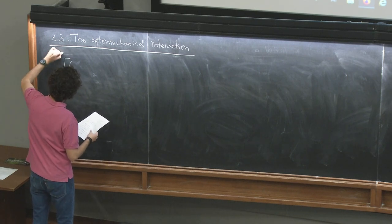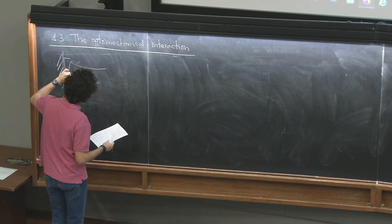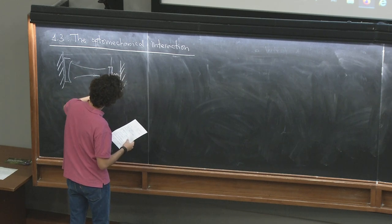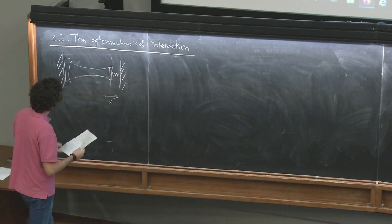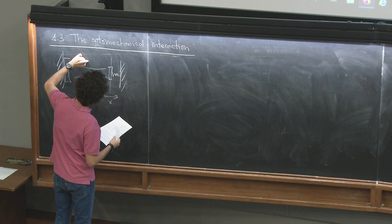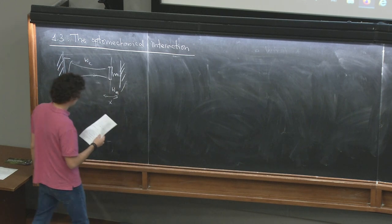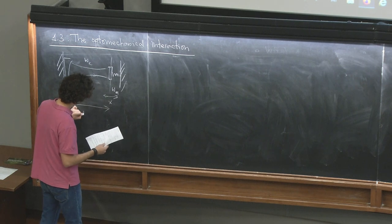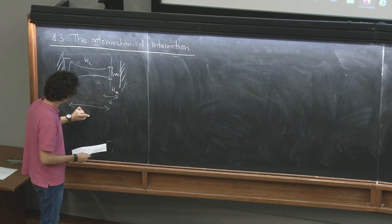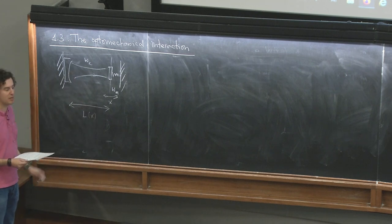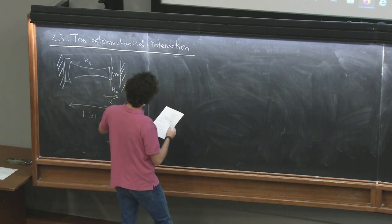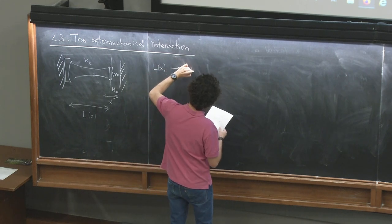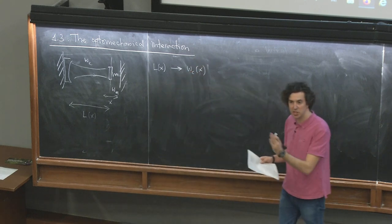In our setup, we have this fixed mirror, then a movable one with motion X, and a cavity mode at frequency ωc, plus a mechanical mode at ωm. There is the length of the cavity, L. Precisely because one end of the cavity can move, L now depends on X — it depends on the position of the mechanical oscillator. Since the length of the cavity depends on the position, the resonance frequency of the resonator depends on the position of the mirror.